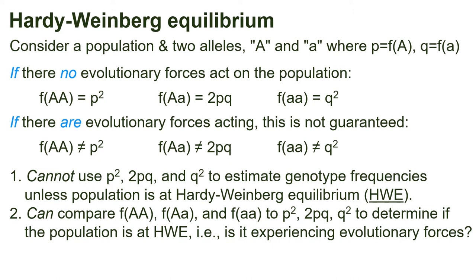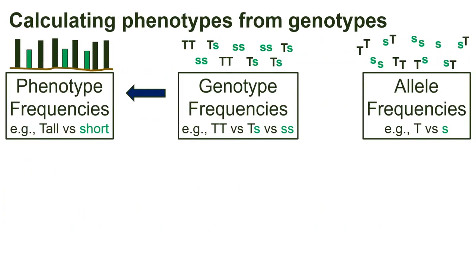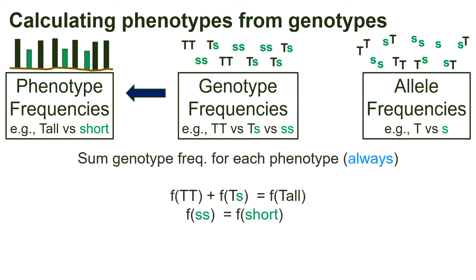Comparing observed genotype frequencies to the predicted ones is a useful tool for learning about natural populations. Let's go back to our tall and short example. First, let's think about calculating phenotype frequencies from genotype frequencies. For this, we can sum the genotype frequencies that correspond to each phenotype — we sum the frequency of TT homozygotes and the frequency of heterozygotes to get the frequency of the tall phenotype, and the frequency of ss gives the short phenotype directly. As long as we know how genotypes match up with phenotypes, this method always works, whether the population is at HWE or not.